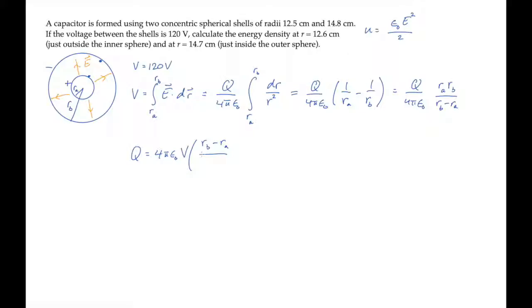That equals this expression, which we can substitute into the electric field that we know from Gauss's law. That's q over 4 pi epsilon naught r squared. When you substitute our expression for q, the 4 pi epsilon naught cancels, and we end up with this.